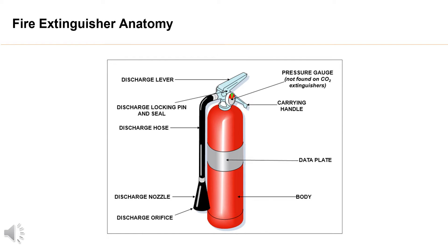The valve regulates the extinguishing agent flow. It is composed of a body, a handle to lift the fire extinguisher, a locking pin, a release lever, and a dip tube. In stored pressure fire extinguishers we can also find a pressure gauge or a pressure indicator. The body of the valve is made of stamped brass, molten aluminium, or highly resistant technical resins.